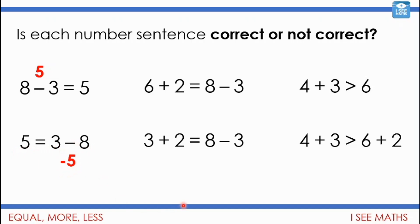Now 6 plus 2 equals 8 subtract 3, is that true? Well 6 plus 2 is 8, 8 subtract 3 is 5, so no that's incorrect because they're not the same. What about 3 plus 2 equals 8 subtract 3? Yeah they're the same, both being 5. 4 plus 3, is that greater than 6? Yes, 4 plus 3 is 7, that is greater than 6.